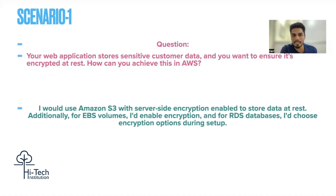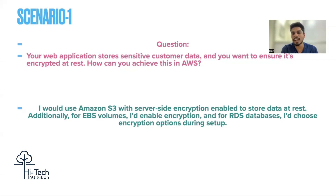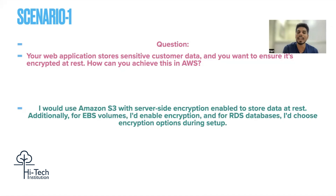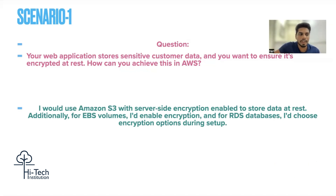I would use Amazon S3 with server-side encryption enabled to store data. Whatever web application data you have, it can be backed up or stored in AWS S3 with encryption at rest enabled. Additionally, if your application is hosted on a server using an EBS volume, we can enable EBS encryption using the KMS service. And if you are storing data in a database using the RDS service, there is an encryption option available when setting up the database itself. These are the three possible areas where customer data can be encrypted.